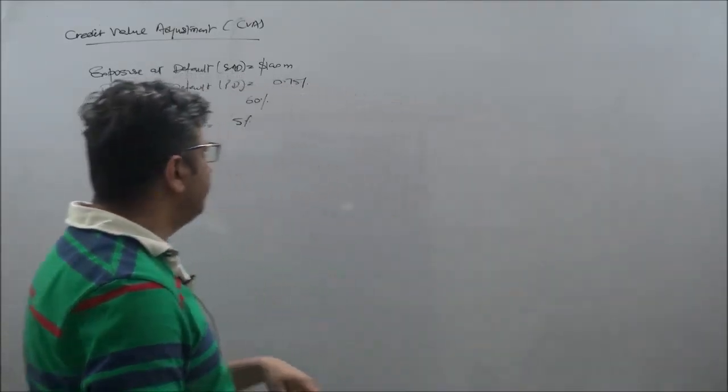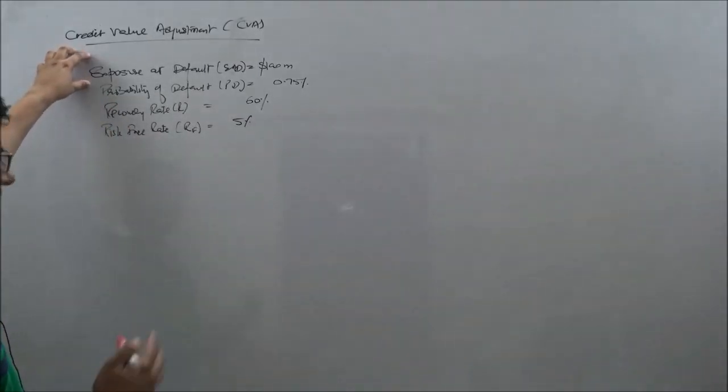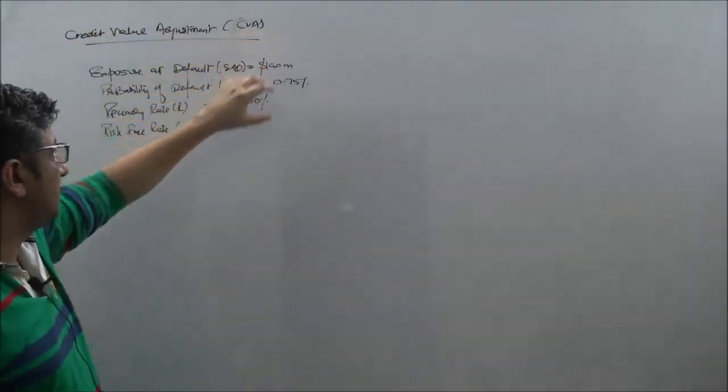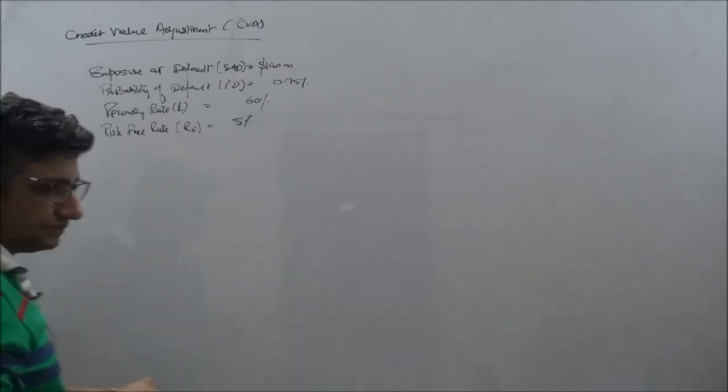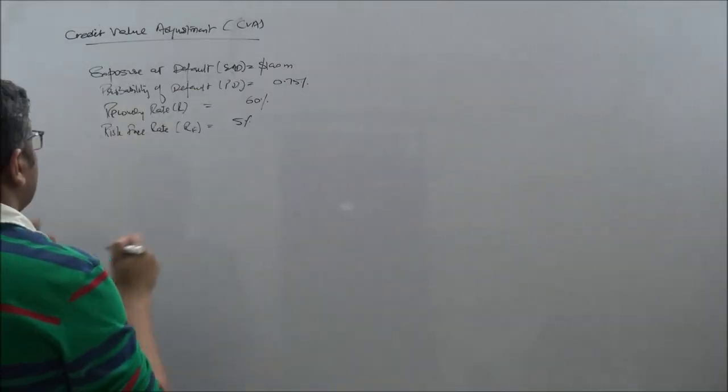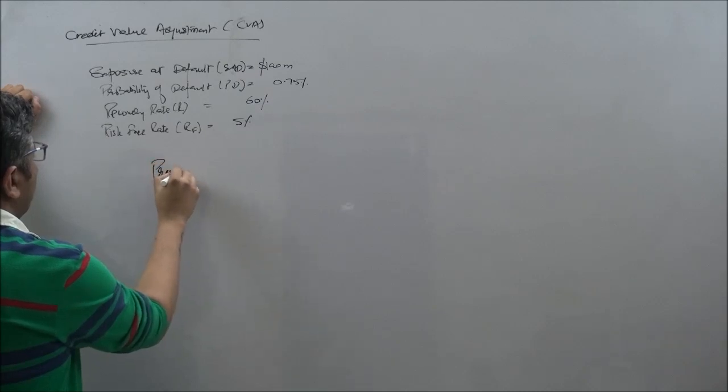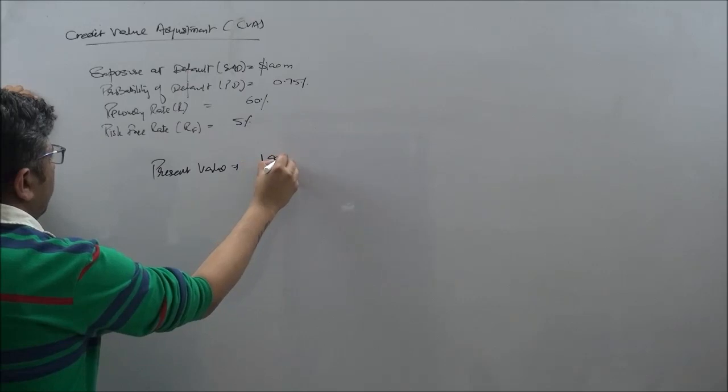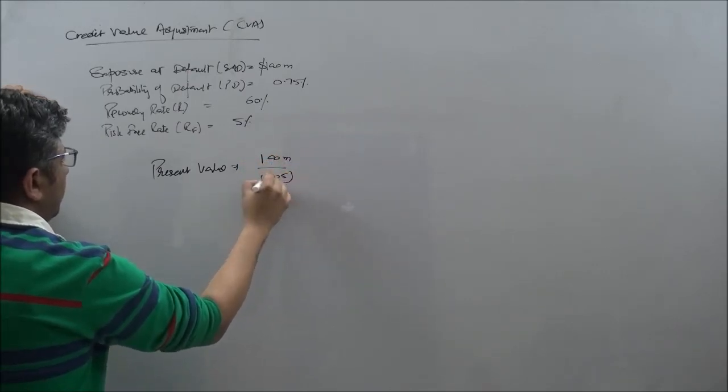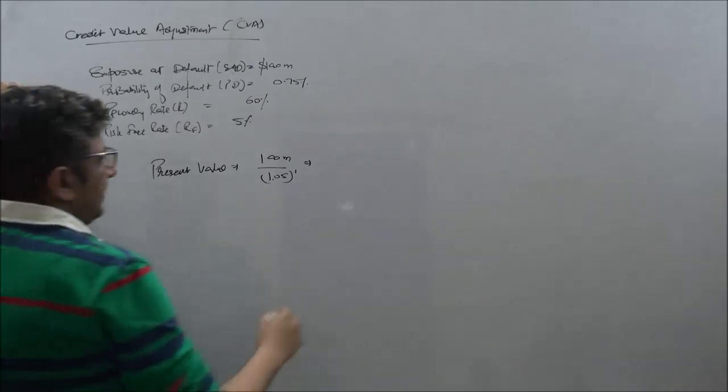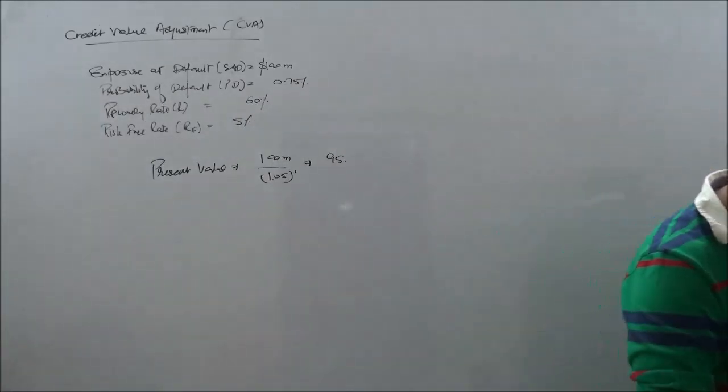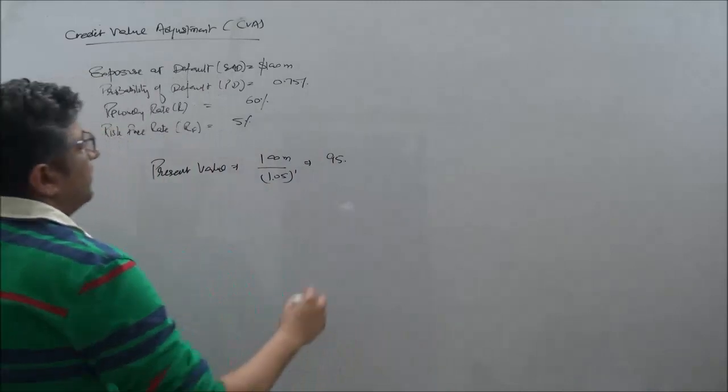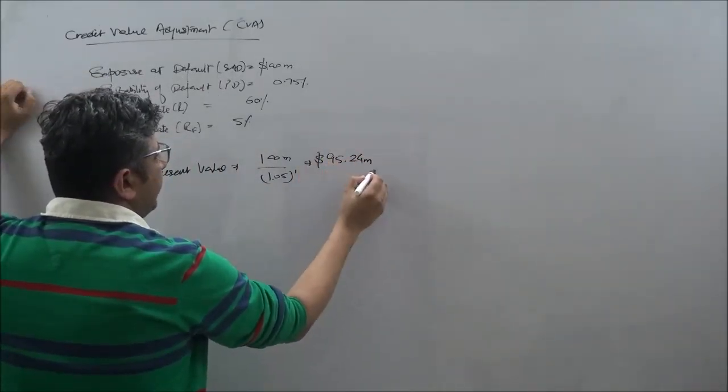If I say for example, I have an exposure, I have given some payment to somebody which is expected to come to me in a year's time of $100 million and my discount rate is 5%, I can certainly calculate the present value of that as 100 million divided by 1.05 to the power 1. Now, this would be something like 95 point, in this calculation maybe on the calculator.